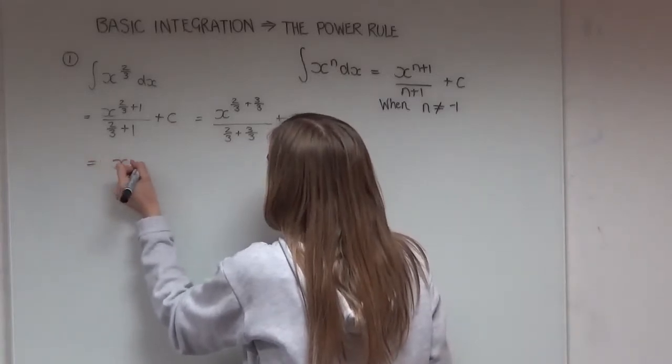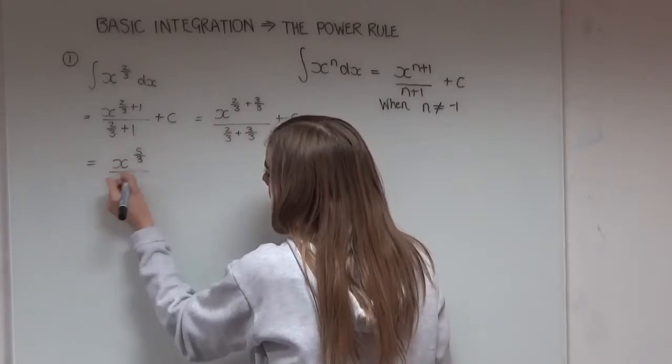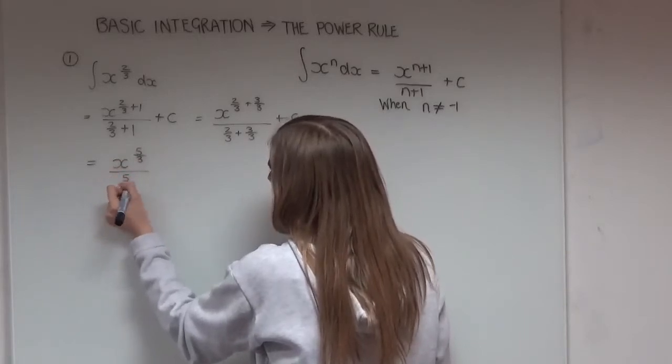So tidying this up, that becomes x to the power of 5 over 3, all divided by 5 over 3 again.